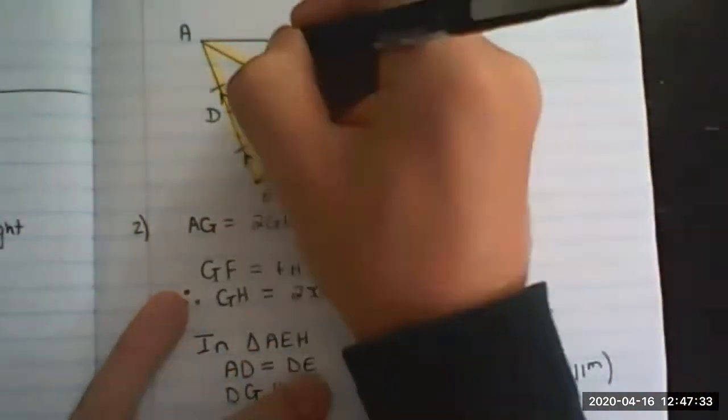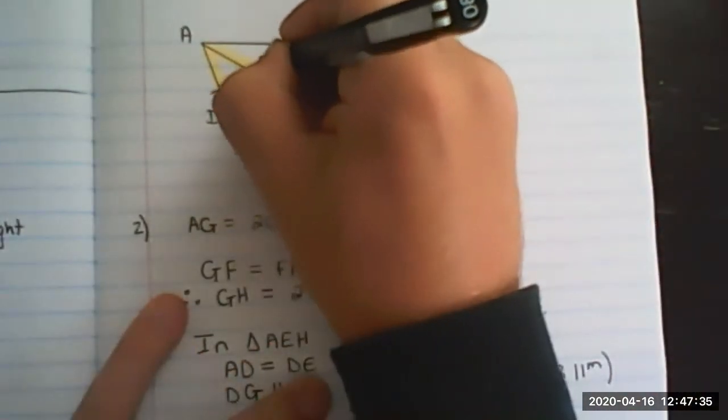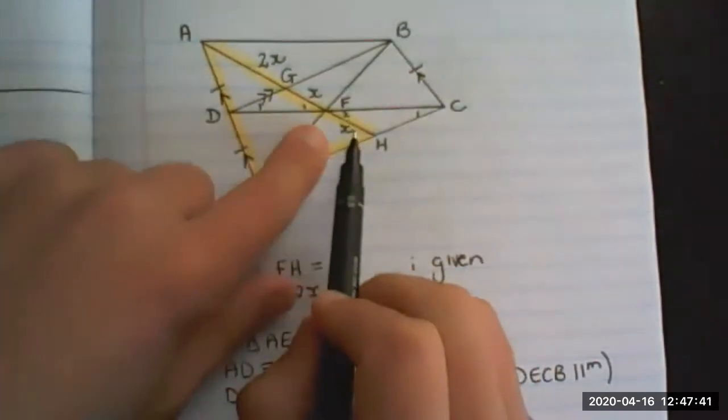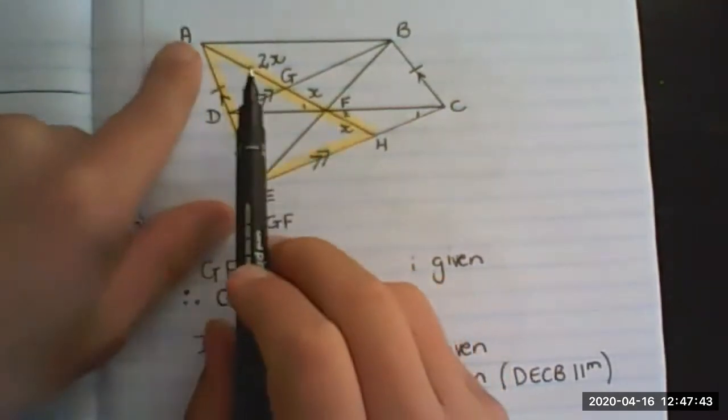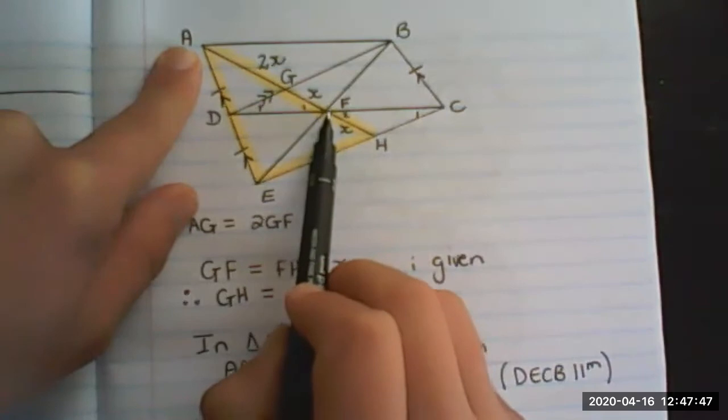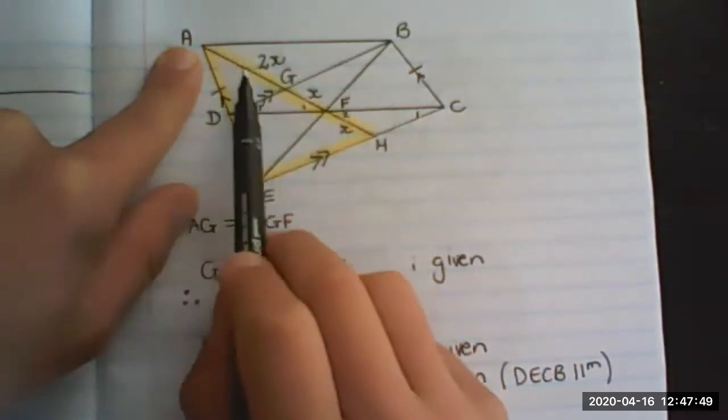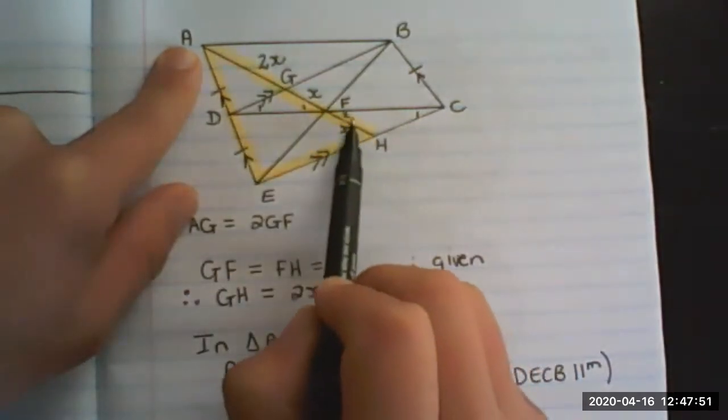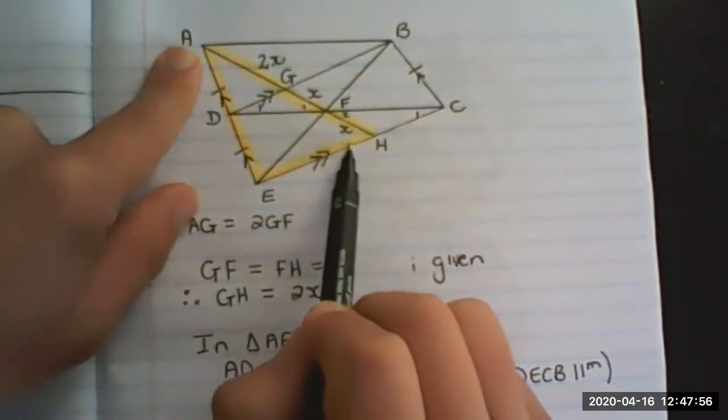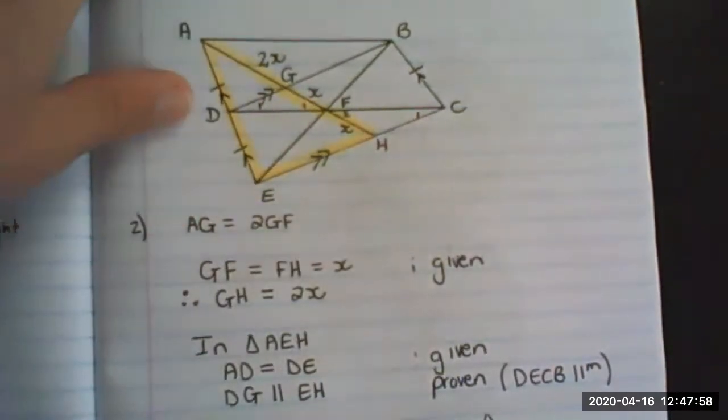But what we have already proven in the previous question is that is 2x. So we can actually see that AG plus GF plus FH is all 3x. But this is one part of x and that is two parts of x. So it's one, two, three, the ratio.